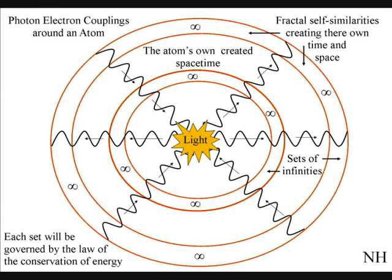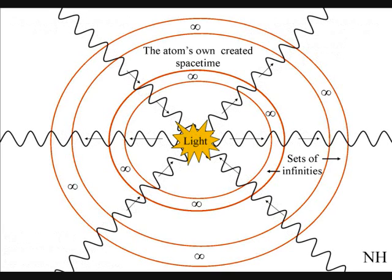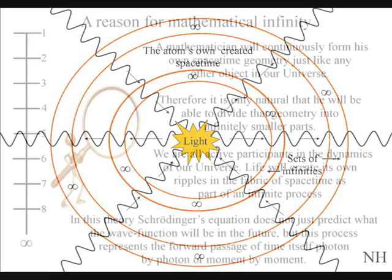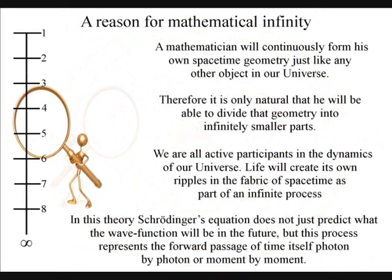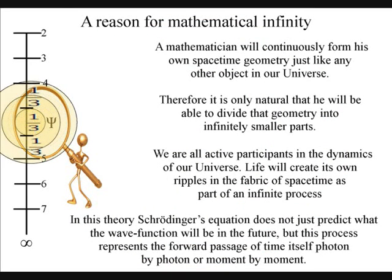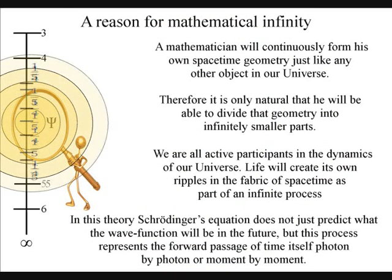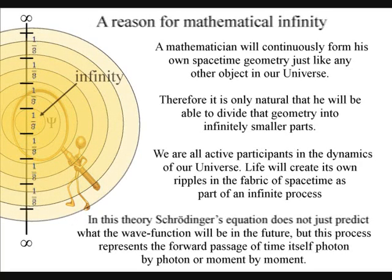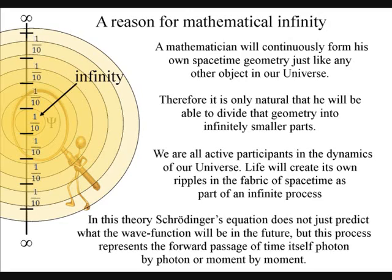This forms a continuous expansion at the quantum level that forms the continuum of time and the geometry of spacetime that can always be divided into sets of infinities. A mathematician will continuously form his own spacetime geometry just like any other object in our universe. Therefore, it is only natural that he will be able to divide that geometry into infinitely smaller parts.